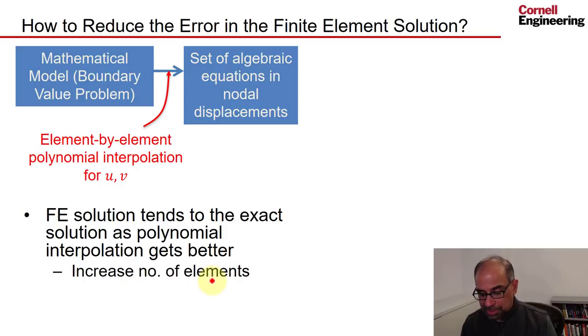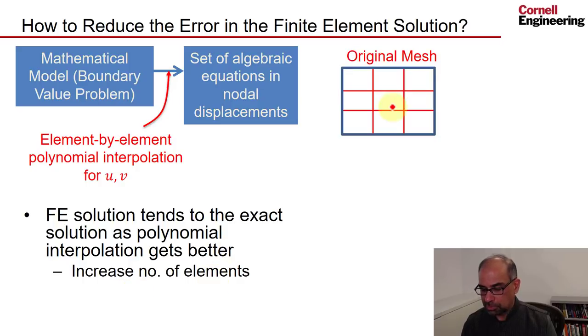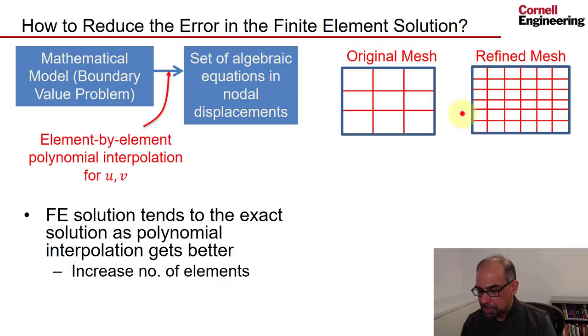One is by increasing the number of elements. So this is our original mesh. And we refine the mesh. So we have twice the number of elements in each direction. So we go from nine elements to 36 elements. So here we are representing the field as the unknown functions as a combination of nine polynomials, whereas here I'm representing it as 36 polynomials. Obviously, the latter is better.